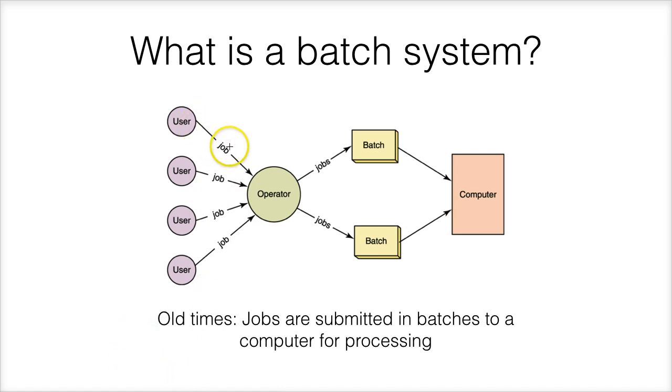For example, users would submit jobs to the operator, and then the operator would compile the jobs in batches. So one batch might be composed of job number one and number two, and another batch would be composed of job number three and number four.